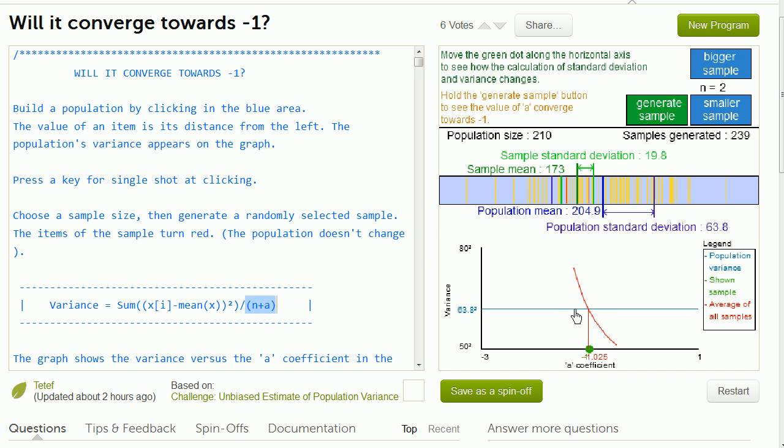Anything less than negative 1, if we did n minus 1.05 or n minus 1.5, we start overestimating the variance. Anything less than negative 1, so if we start, if we have n plus 0, if we divide by n, or if we have n plus 0.05, or whatever it might be, we start underestimating the population variance.